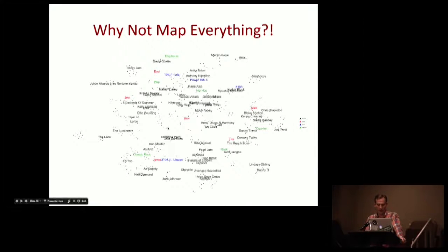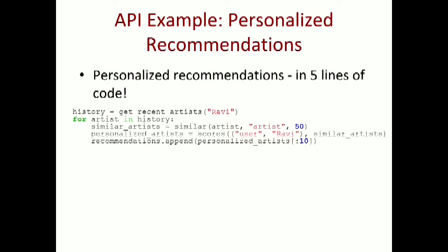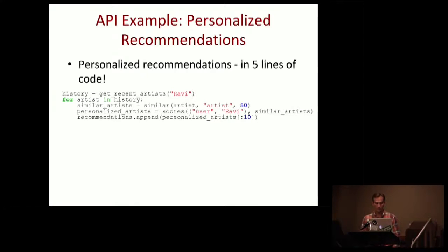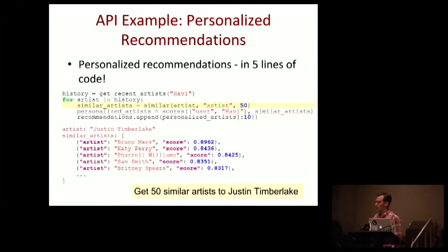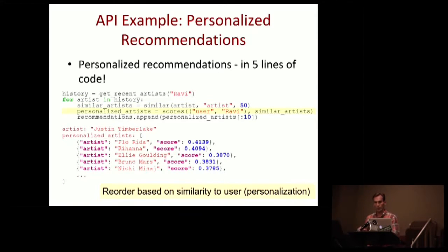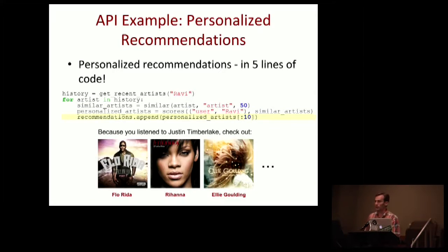We've factorized about 10 or 12 different entity types into this vector space — radio stations, genres, and more. You can almost put anything in there. Here's an example of the API's power: if we want to recommend new music for Ravi, we pull two artists from his recent history, find similar artists to those, then score each against Ravi's entity and take the top 10 to recommend.